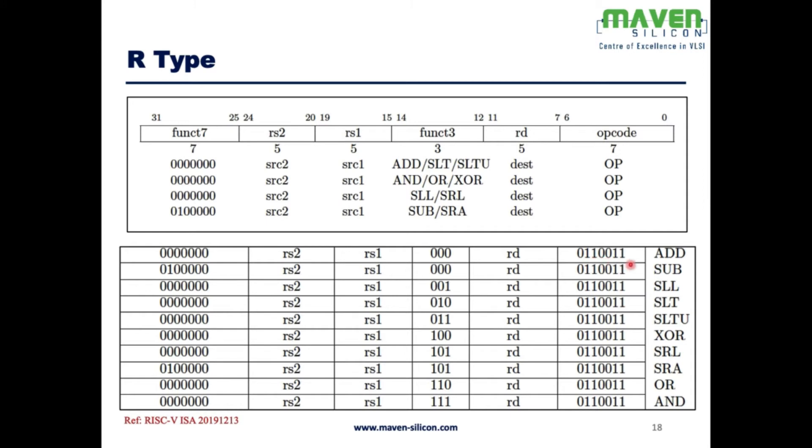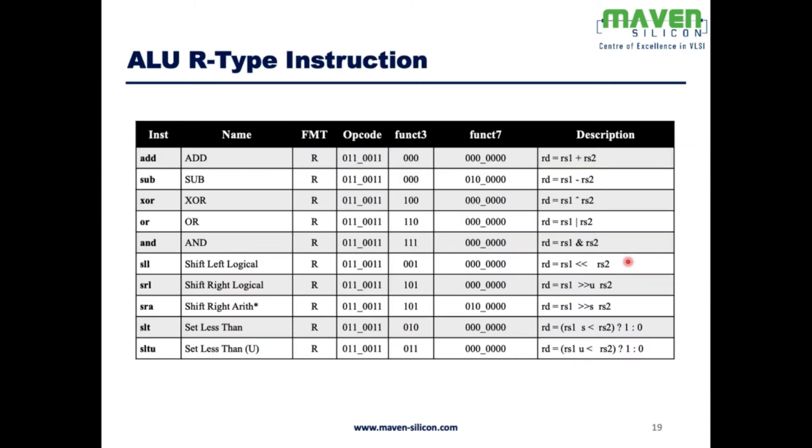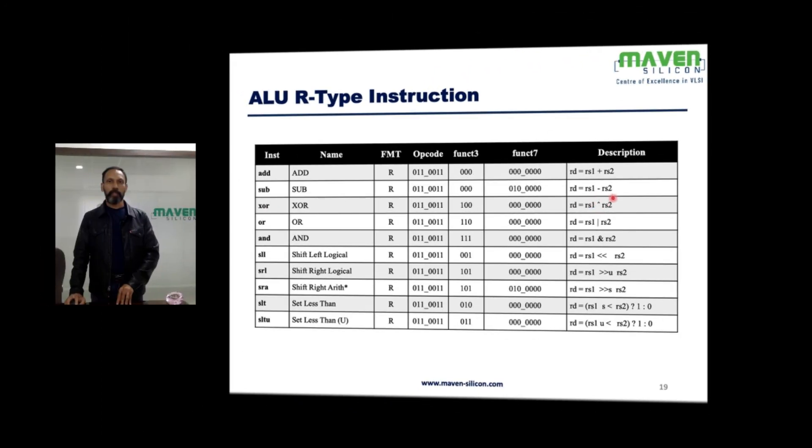Let's look at the details. ADD: rd equals rs1 plus rs2. SUBTRACT: rs1 minus rs2. XOR: rs1 XOR rs2. OR: rs1 bitwise OR rs2. AND: rs1 bitwise AND rs2. Shift left logical: rs1 shift left rs2. Shift right logical and shift right arithmetic.